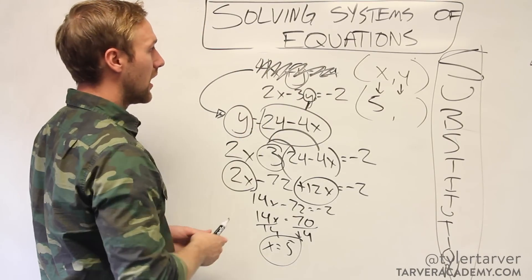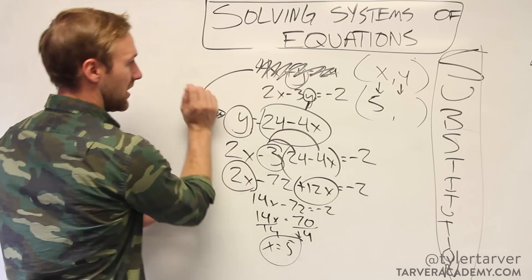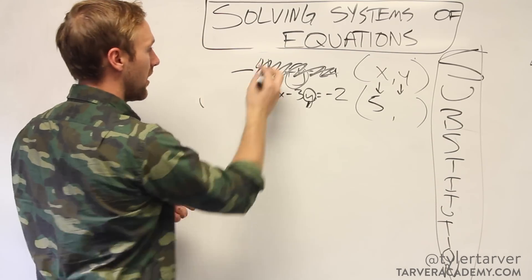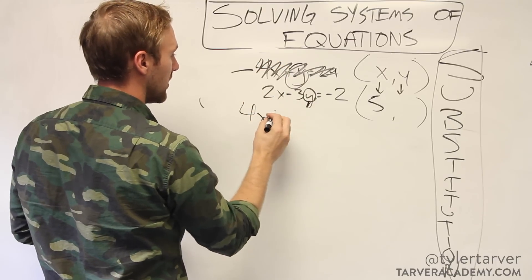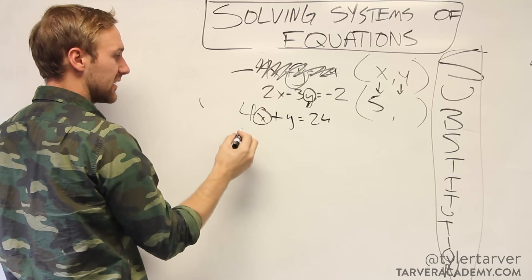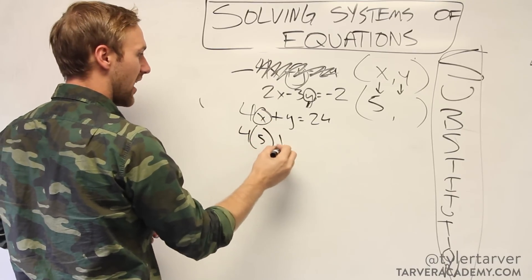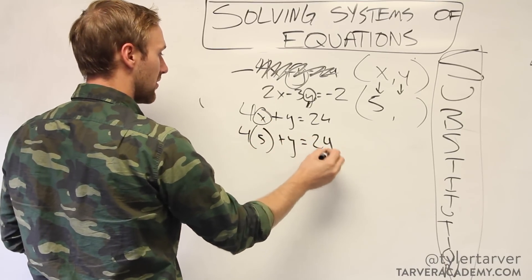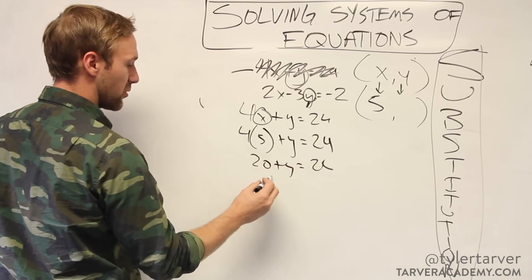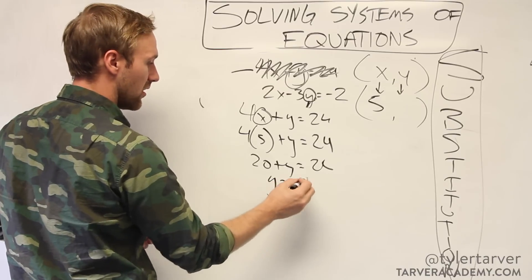So I'm going to take either one. Let's take this top one. Let me get me some room. That original problem was 4x plus y equals 24. I know my x is 5. So wherever I see x, I replace that with 5. That's 20 plus y equals 24. Subtract 20 from both sides. Y equals 4.